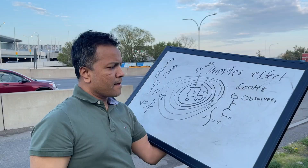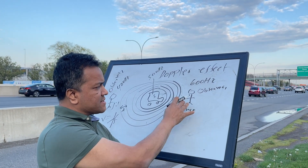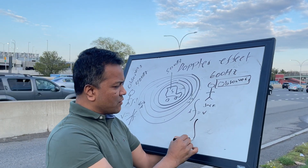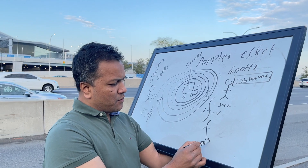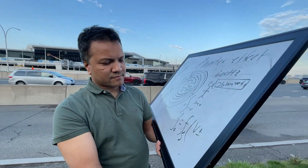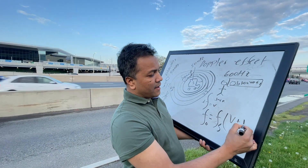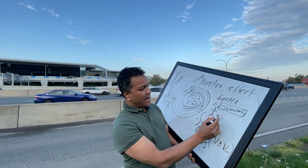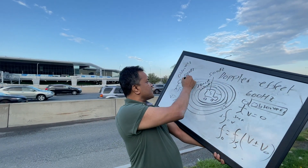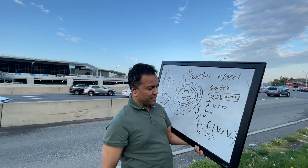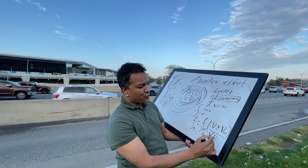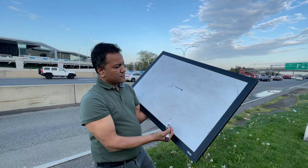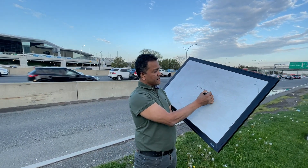The frequency observed by an observer — say Jack — is equal to the frequency coming from the source, multiplied by the velocity of sound plus or minus the velocity of the observer, divided by the velocity of sound plus or minus the velocity of the source, which is the truck. Jack is to the right and Jill is to the left.